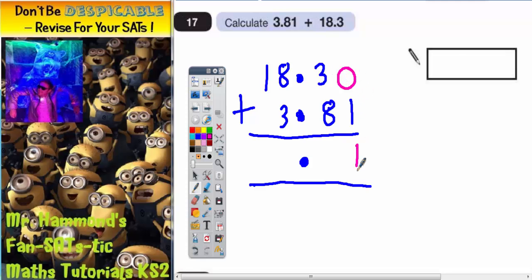So 0 plus 1 is 1, 3 plus 8 is 11 put your 1 in, carry your 1 to the next column. 8 plus 3 is 11 again plus that 1 is 12 so put your 2 in, carry your 1 and 1 plus this 1 that I've carried is 2 so the final answer is 22.11.